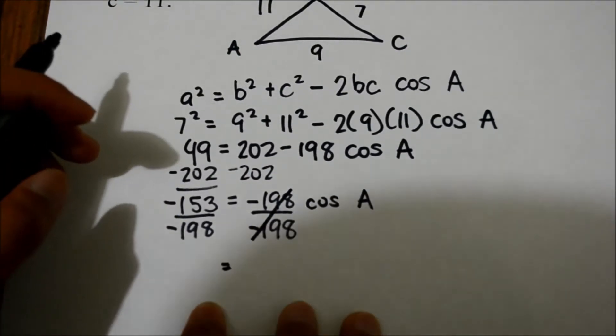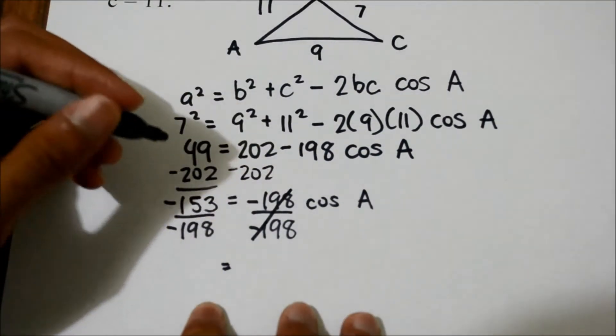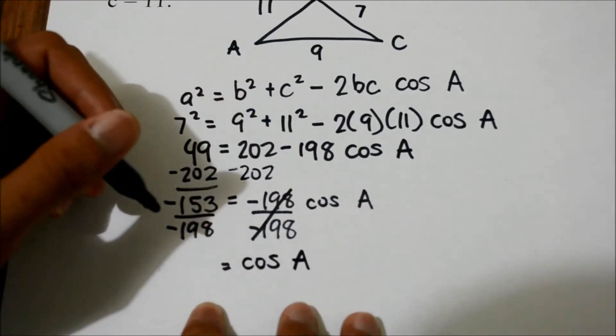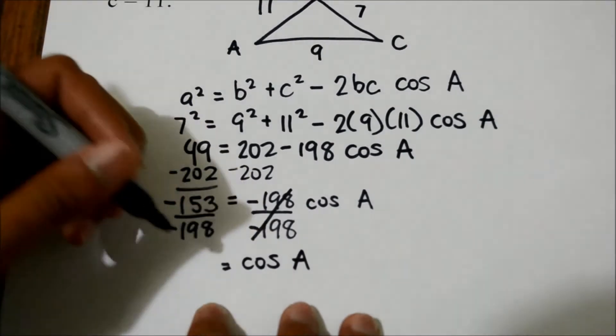Then we can use a calculator to figure out the angle of A by using the inverse cosine of the result after subtracting 202 and dividing negative 198 from 49. So the angle will be, rounding it to the nearest tenth, 39.4 degrees.